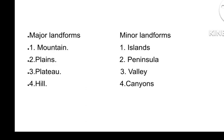Mainly, landforms have been divided into two categories: major landforms and minor landforms. In the major landforms there are four: first is mountain, second is plain, third is plateau, fourth is hill. In the minor landforms: number one is islands, number two is peninsula, number three is valley, number four is canyons.